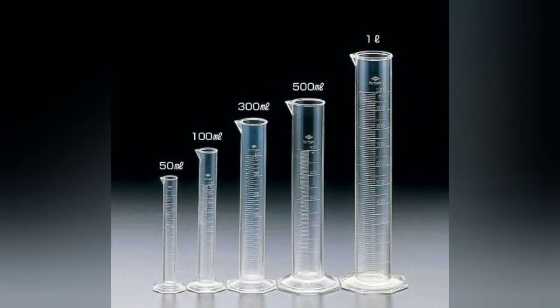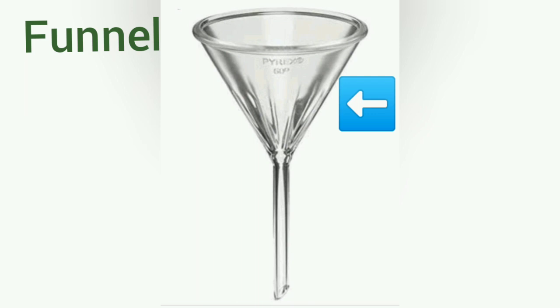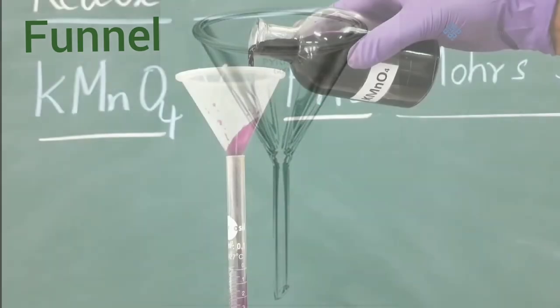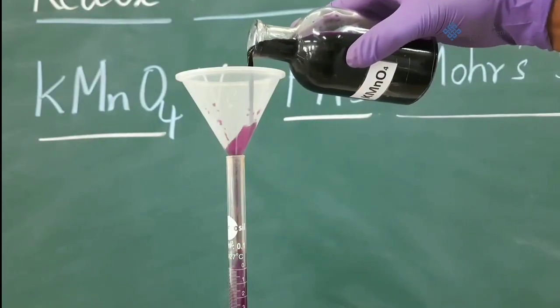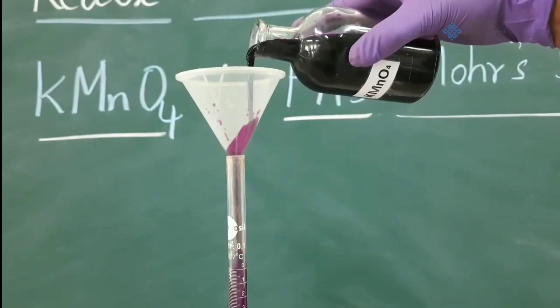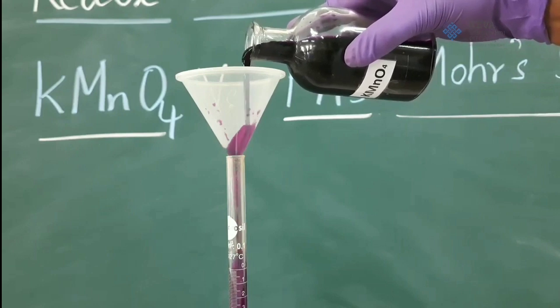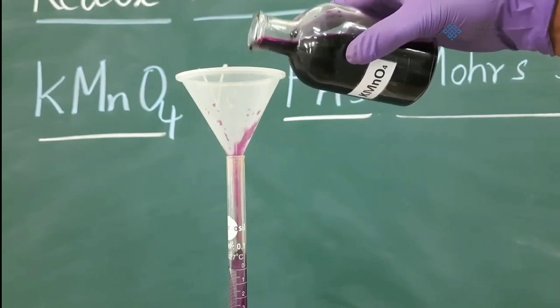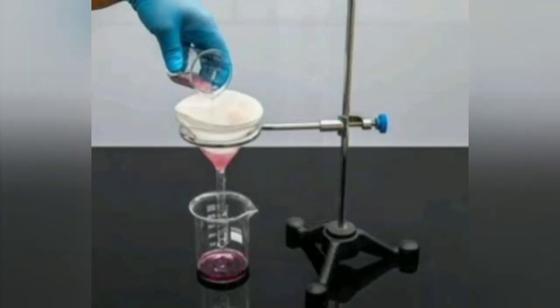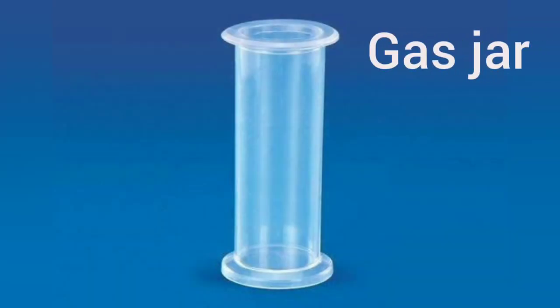The measuring cylinder is available in different volumes such as 100, 500, and 1000 milliliters. A funnel is a cone-shaped wide glass vessel drawn into a narrow neck. It prevents spilling of liquids and is used to transfer or provide a channel for liquids to flow easily into a container with a narrow opening. It is also used in filtration.